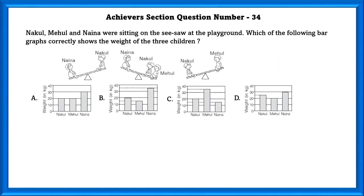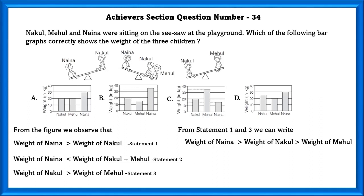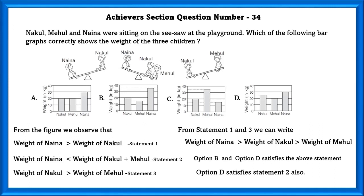Achieve section question number 34. Nakul, Mehul and Nayana were sitting on a seesaw at the playground. Which of the following bar graphs shows the weight of the three children? From the figure we can observe that Nayana has greater weight than Nakul, Nayana has lesser weight than Nakul and Mehul together, and Nakul has more weight than Mehul. From statements 1 and 3, weight of Nayana is more than Nakul, which is more than Mehul. Options B and D satisfy statements 1 and 3, but only option D satisfies statement 2 as well. So the answer is D.